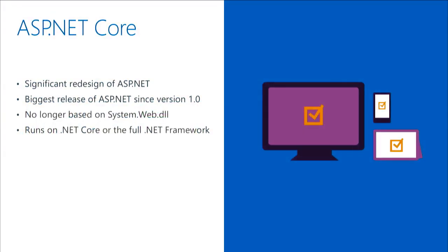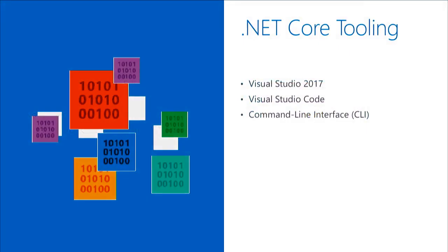ASP.NET Core is a significant redesign of ASP.NET — a complete rewrite of the web framework. This is the biggest release of ASP.NET since version 1.0. It's no longer based on the System.Web DLL. Having a clean break from the past gave the ASP.NET team the ability to develop a fast, modern, cross-platform web framework. It runs on .NET Core or the full .NET framework, giving you the flexibility to use whichever best supports your situation. In this session, we're primarily using .NET Core tooling in Visual Studio 2017.